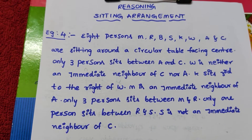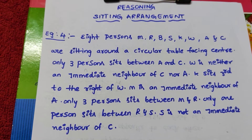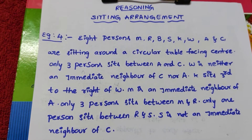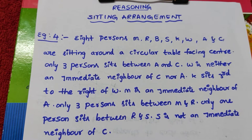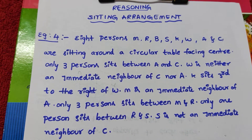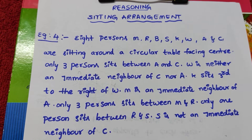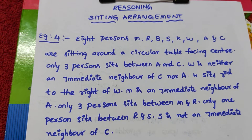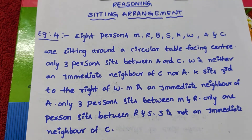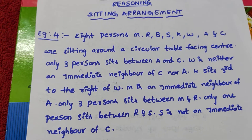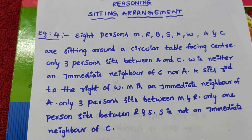Example 4: 8 persons M, R, B, S, K, W, A and C are sitting around a circular table facing center.